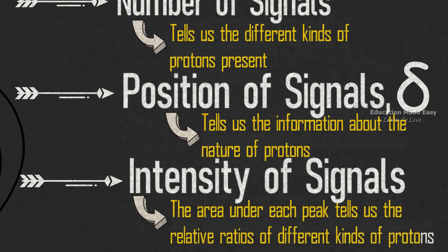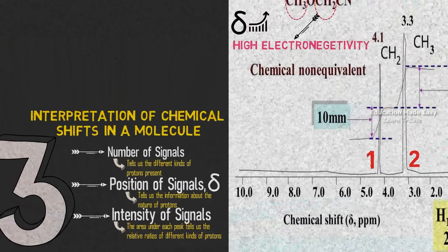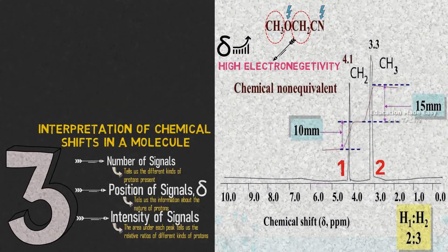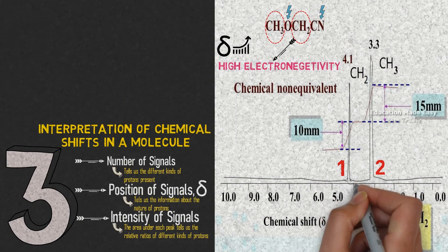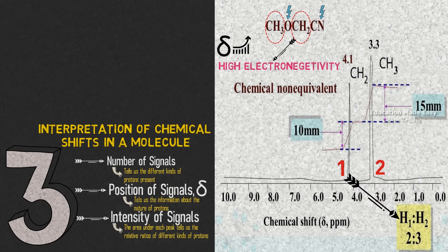Here we can see that the hydrogen atoms ratio between signal 1 and signal 2 is in the ratio 2:3.